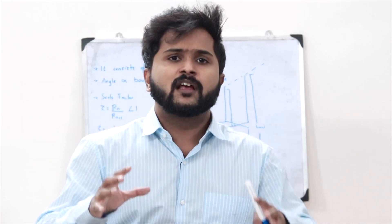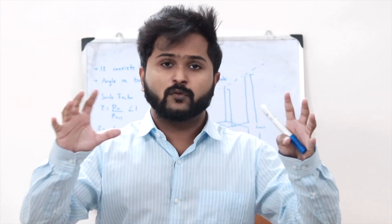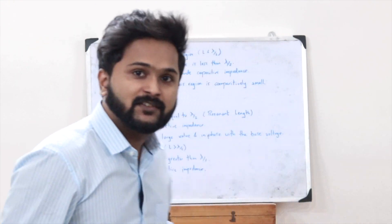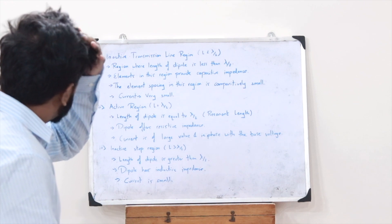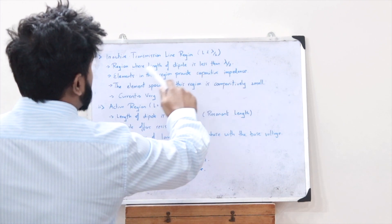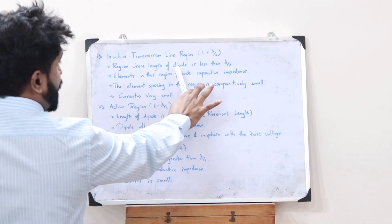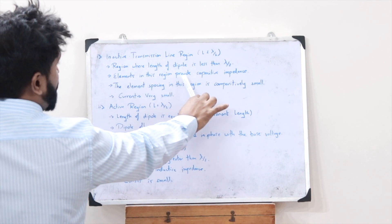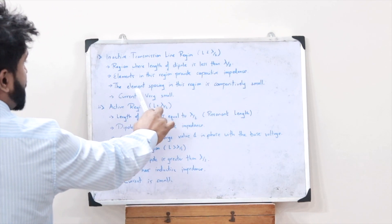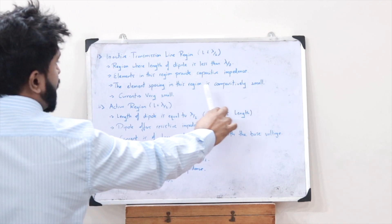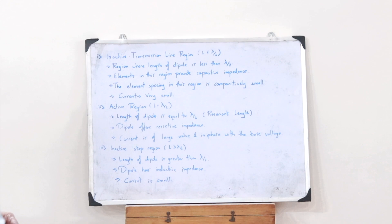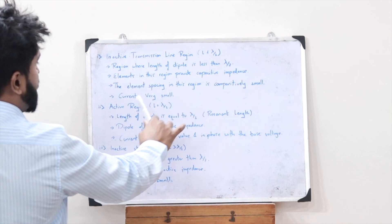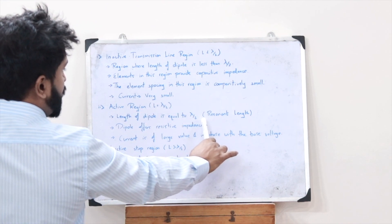There are three regions for the log periodic dipole array based on the dipole length L. First is the inactive transmission line region, where the length L is less than lambda/2. Elements here provide capacitive impedance, element spacing is comparatively small, and the current is very small.